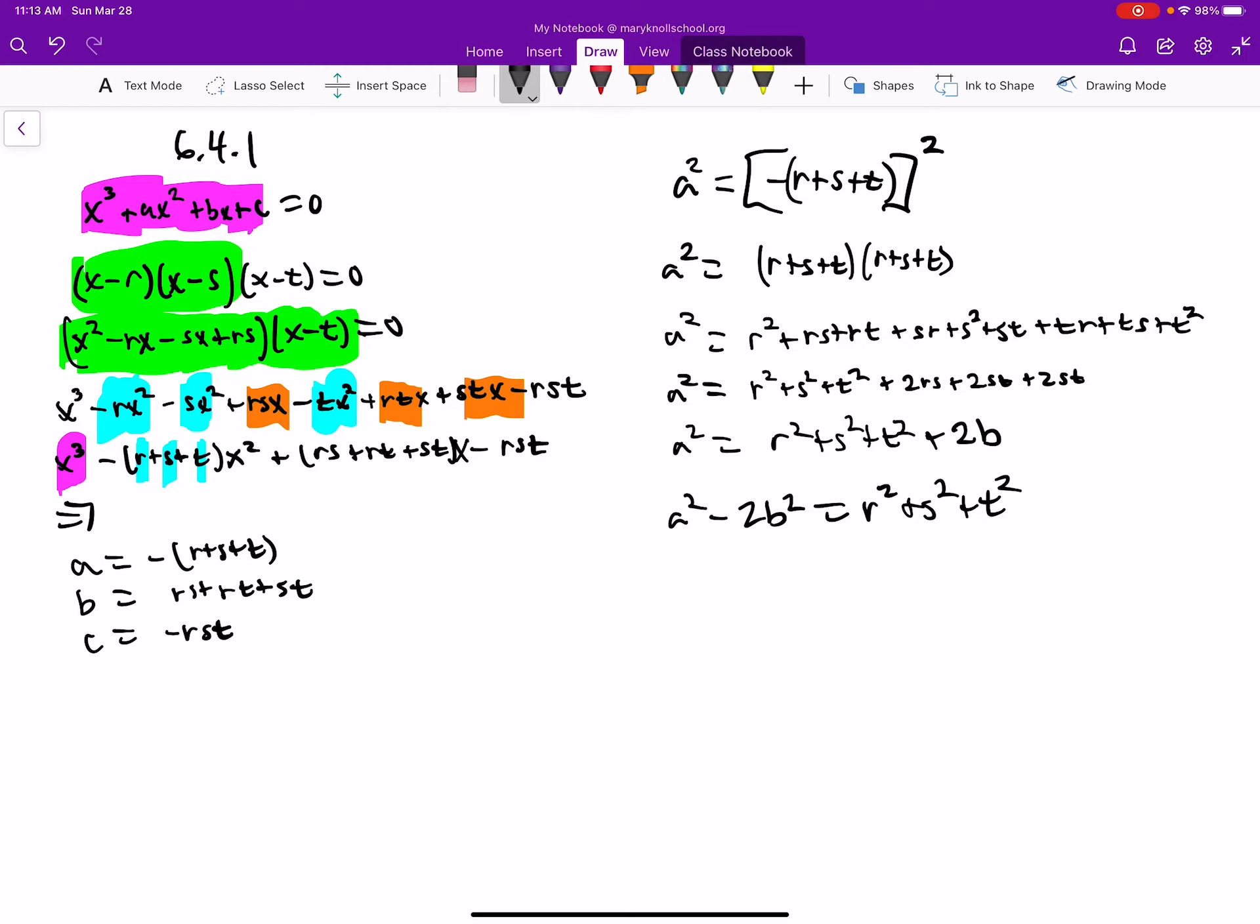So we know that this one, since we have the a, x squared, we know that the a... x squared minus r plus s.